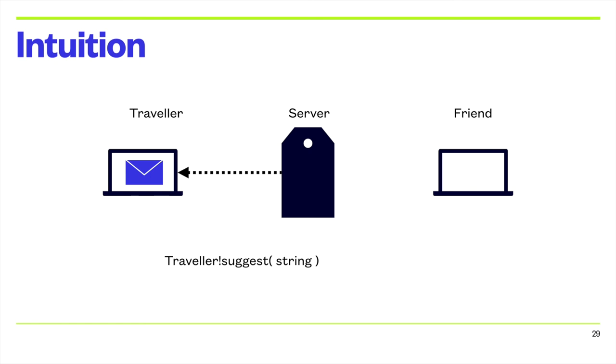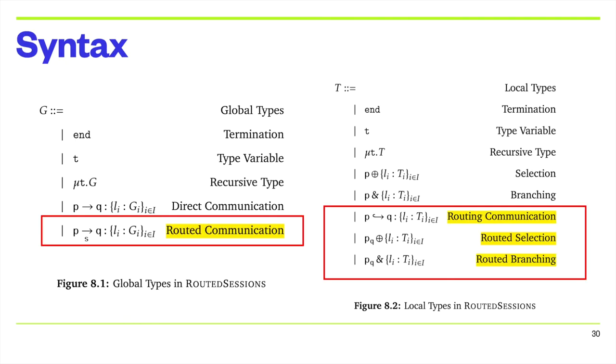We formalize the concept of rooted communication in multi-party session types through our new theory rooted sessions. The formalism involves three steps. First, we define rooted sessions by extending the syntax and semantics of the canonical theory. We define new syntax for rooted communications in global and local types to distinguish it from the original direct communication.